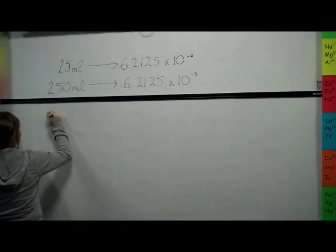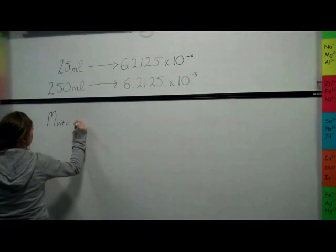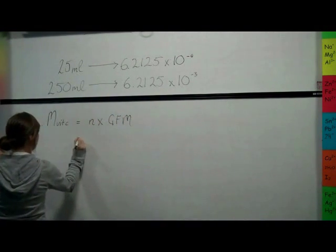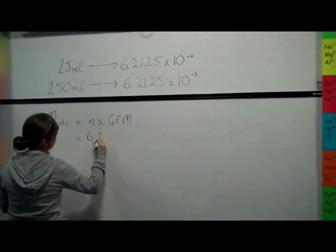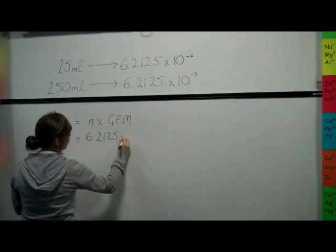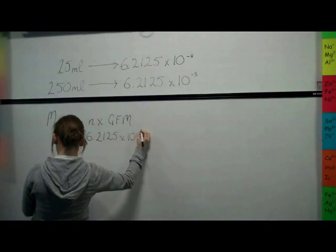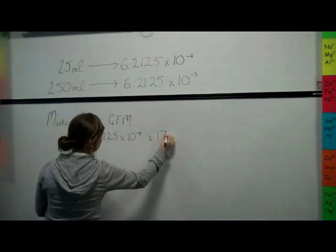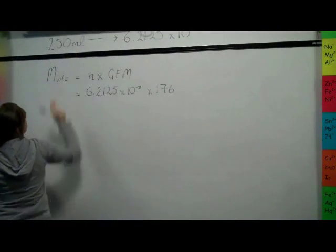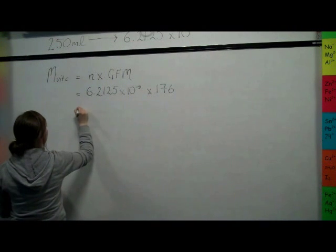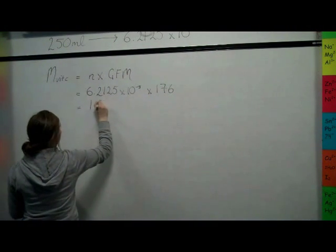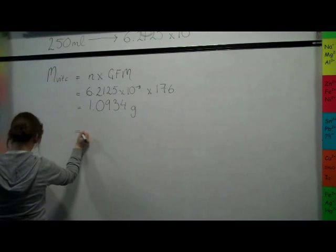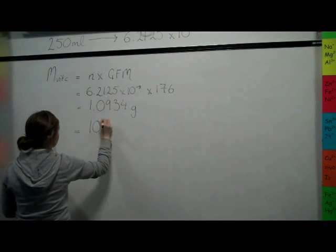This means that we can use the equation M equals N times GFM. We used the number of moles we worked out earlier and the gram-formula mass of vitamin C, which is 176. This gives us a mass of vitamin C of 1.0934 grams, which is the same as 1093.4mg.